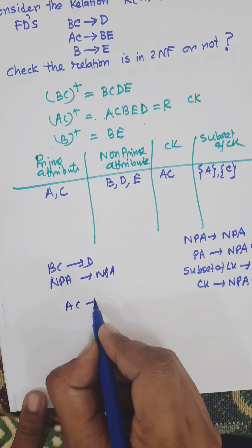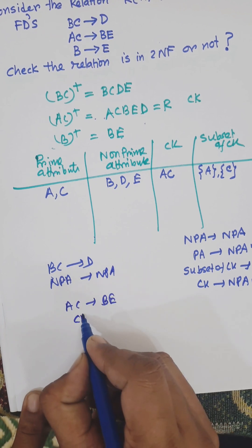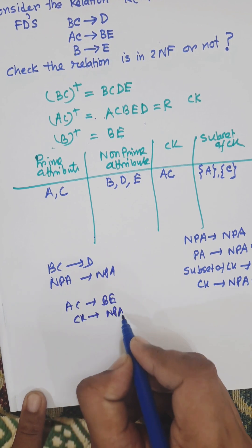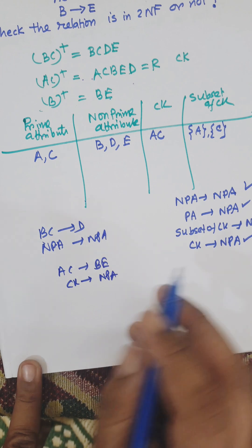Next, AC→B: AC is the candidate key and B is a non-prime attribute. This is allowed in 2NF.